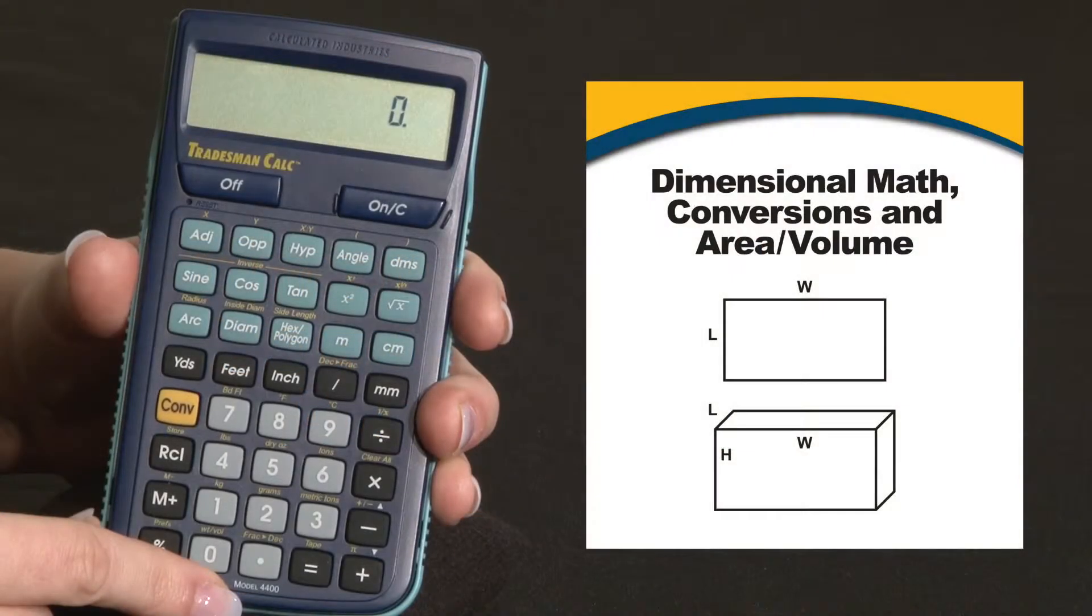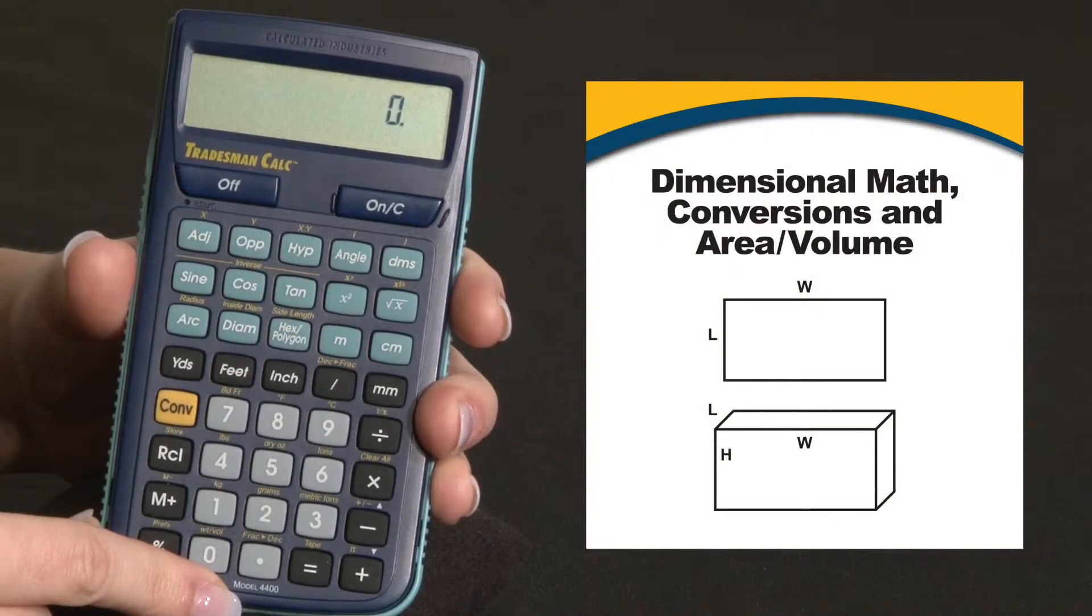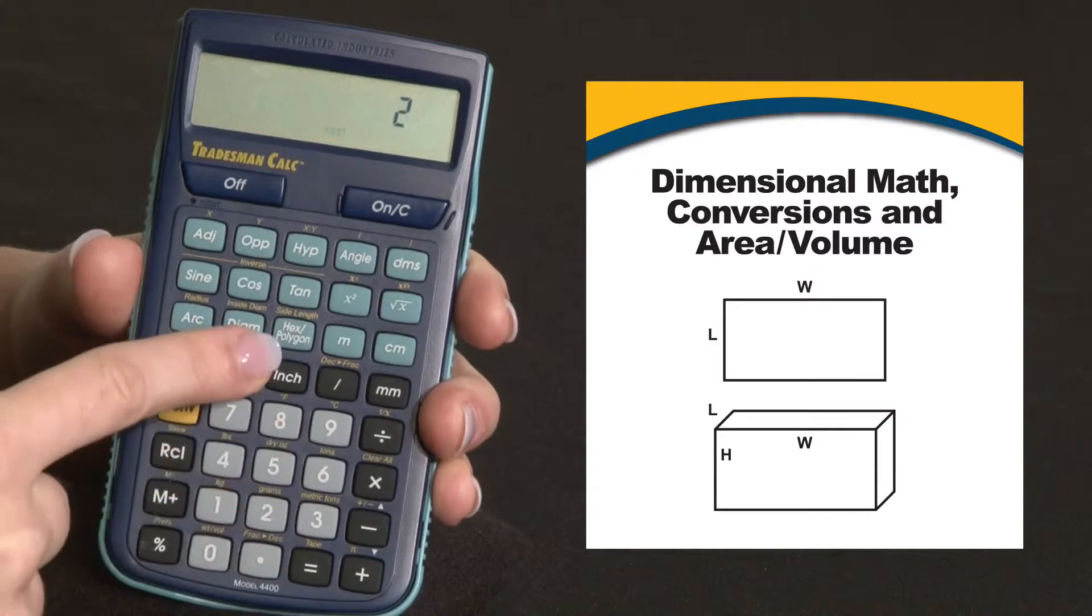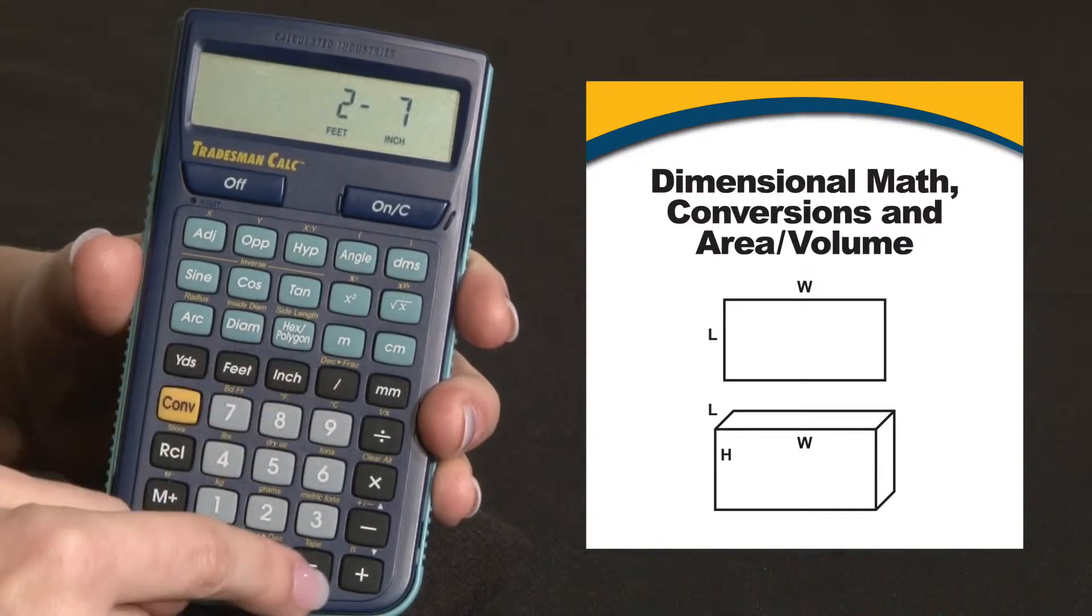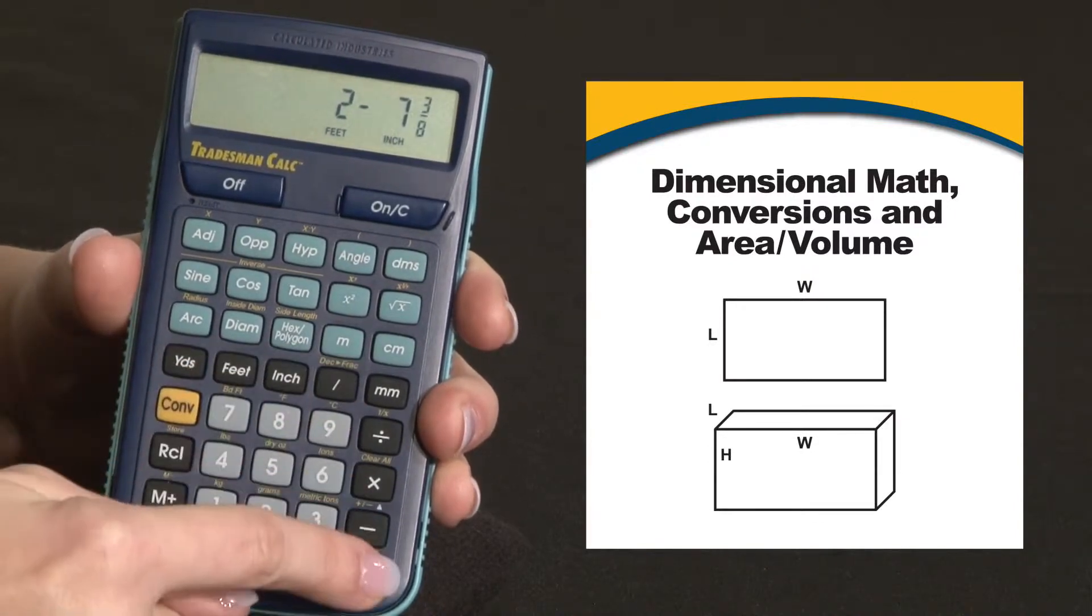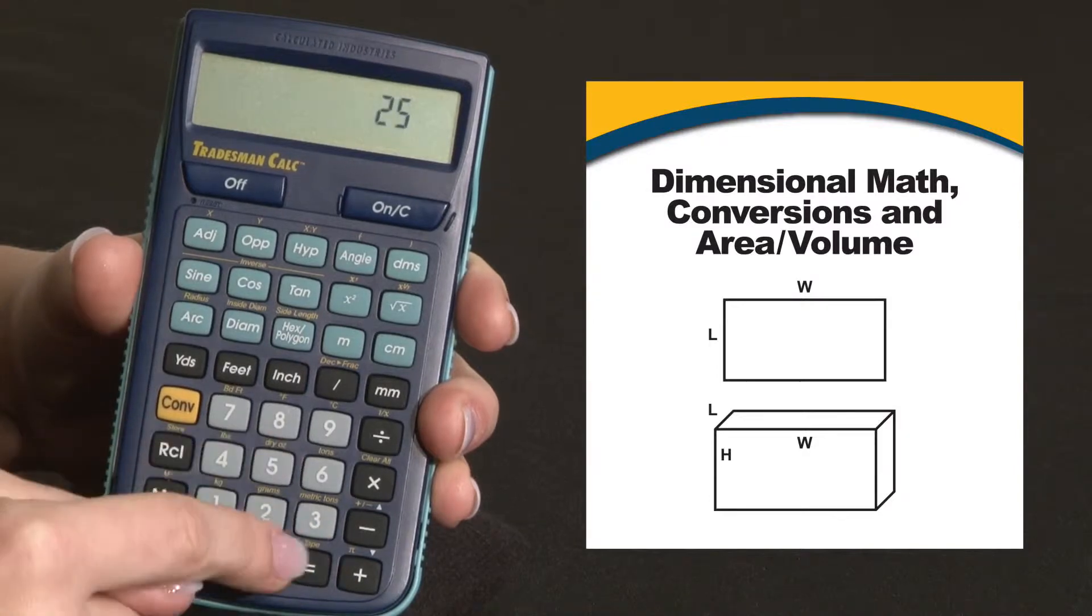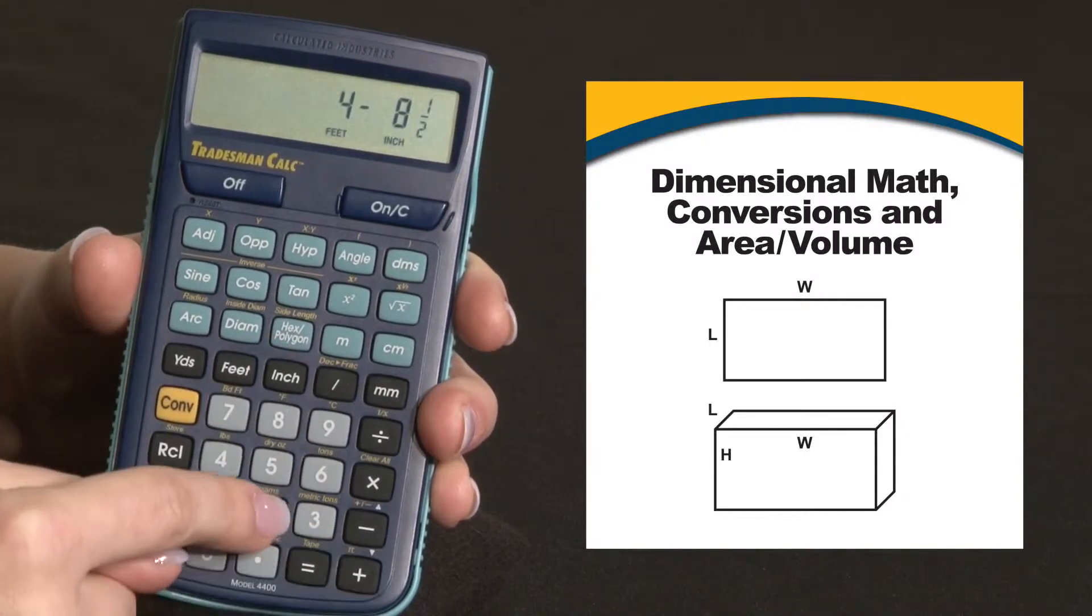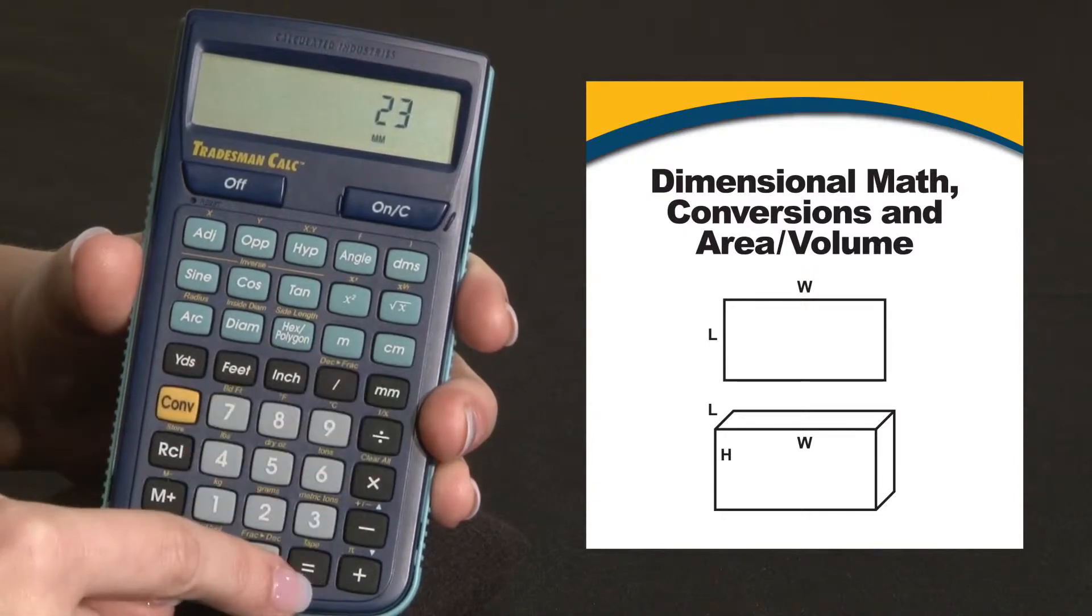Now let me show you how to do some dimensional math and conversions on the Tradesman Calc. You can enter and combine all types of dimensional units such as 2 feet, 7 inches, 3 eighths plus 25.125 inches plus 23 millimeters.